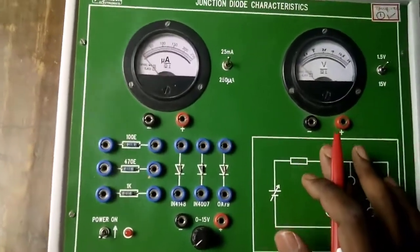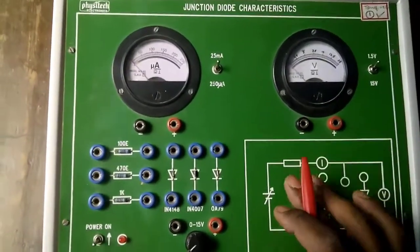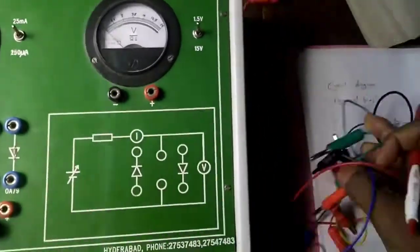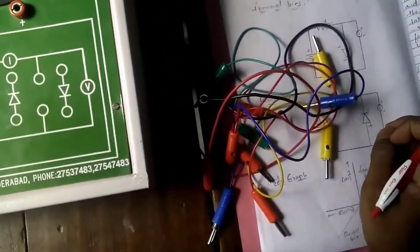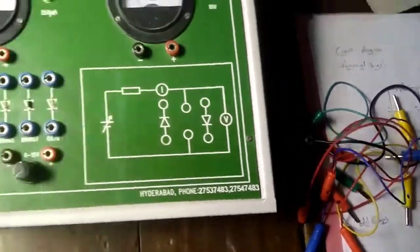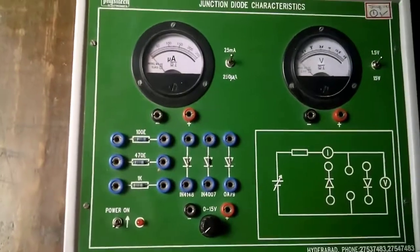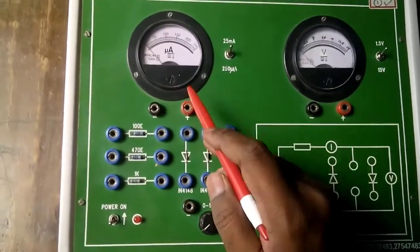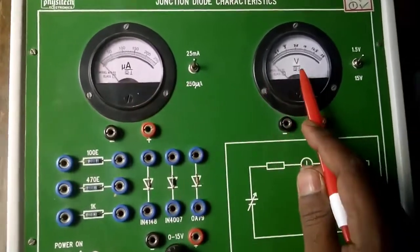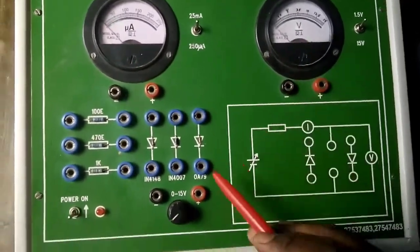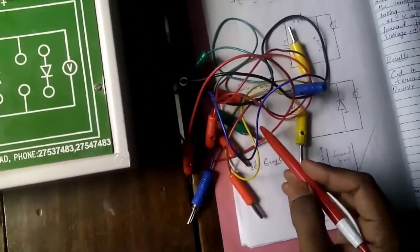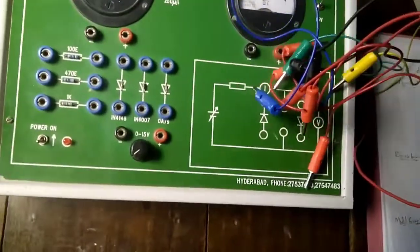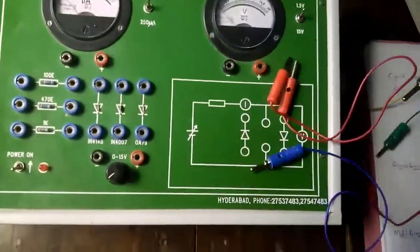A microammeter is given, a voltmeter is given, and there is a variable power supply — you have to take out 0 to 15 volts. This is the apparatus on the board. On the right side there is also a printed circuit. We will take out patch cords and use them to connect the P-N junction diode circuit. So the apparatus are: voltmeter, ammeter, diode, power supply, and patch cords.